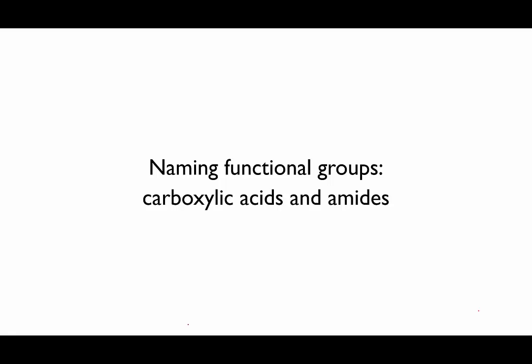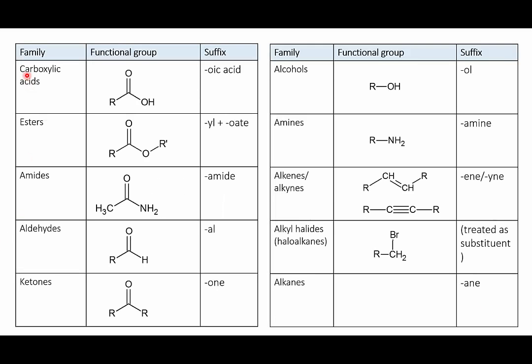In this video we'll look at the naming of carboxylic acids and amides. Carboxylic acids and amides are structurally related. In a carboxylic acid you have a carbonyl group with an alcohol group attached to the same carbon. The combination of a carbonyl group plus an extra oxygen is known as a carboxyl group. The hydrogen on this extra oxygen turns out to be acidic, hence the name carboxylic acid.